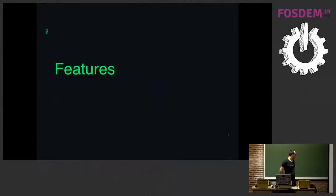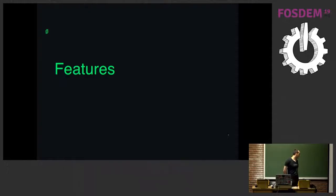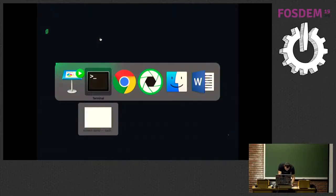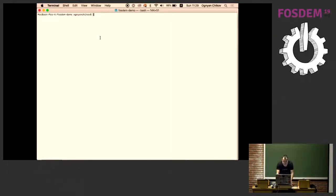Now I'm going to show you how to install and initialize a project with EtherLime. You can install it with just a single command — just run 'npm install etherlime' with the global flag. Depending on your network connection and hardware speed, you'll have EtherLime in just a few seconds. I'm going to show you how to initialize a project and comment on what the project contains.